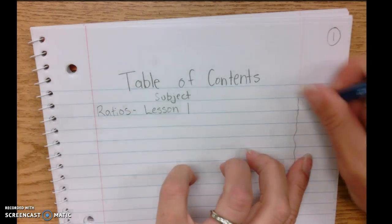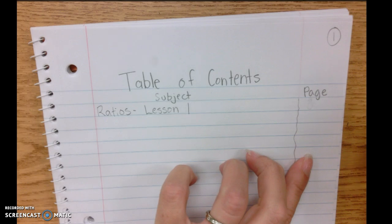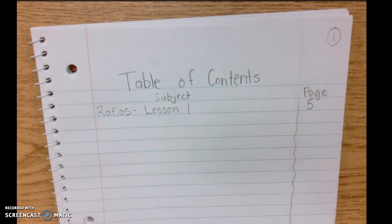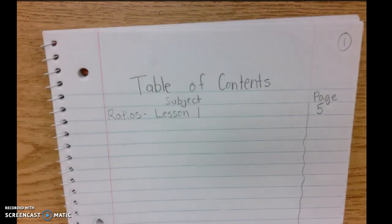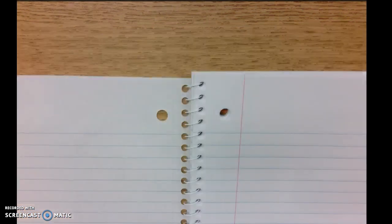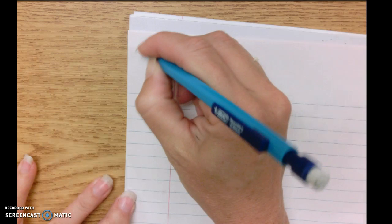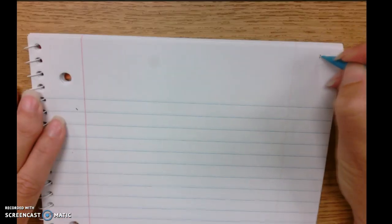Our first one is going to be ratios lesson one and that is going to go actually on page five today. Then we can number our pages. The back of our table of contents should be page two. This we're going to leave blank for another table of contents if we need it.